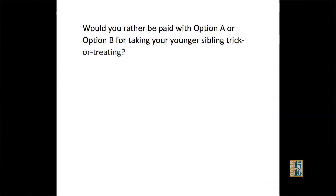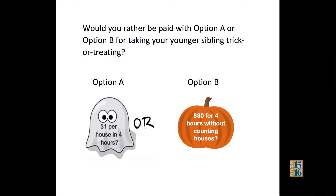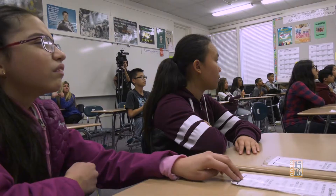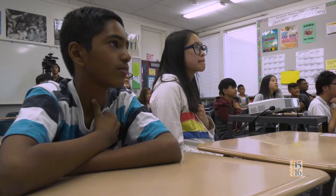Option A or option B for taking your younger sibling trick-or-treating. Option A: you'll get paid $1 per house over four hours. Or option B: you get $80 for four hours without counting houses.